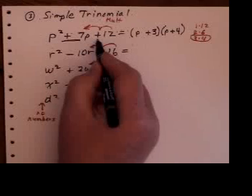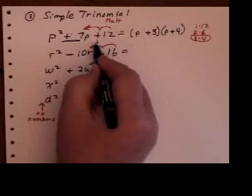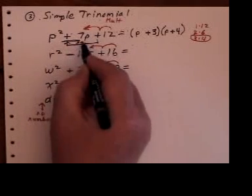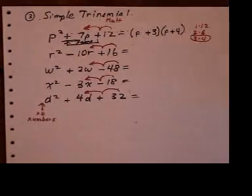This plus sign tells me two things. It tells me to add 3 and 4 to make 7. It also says that if that's a plus sign, both signs in the brackets are going to be the same as this sign here. So that's why I knew it was plus 3 and plus 4.